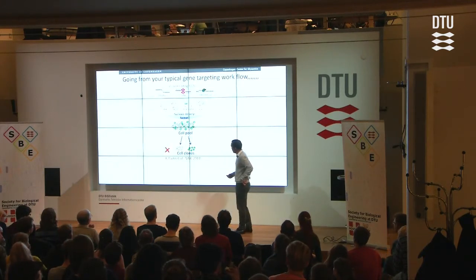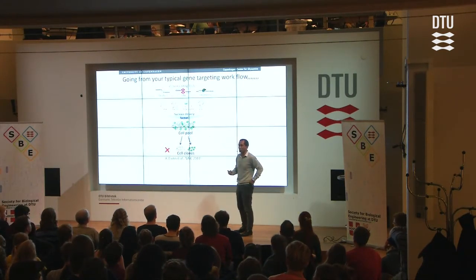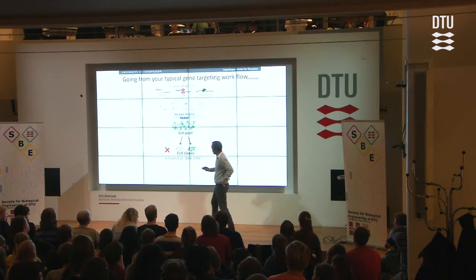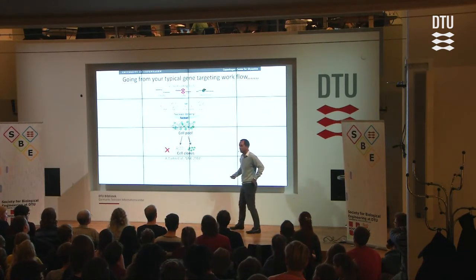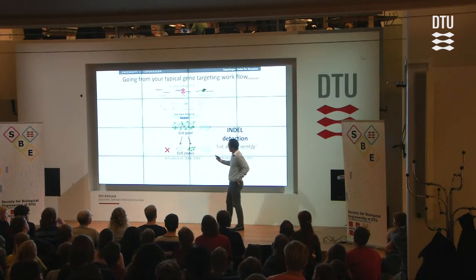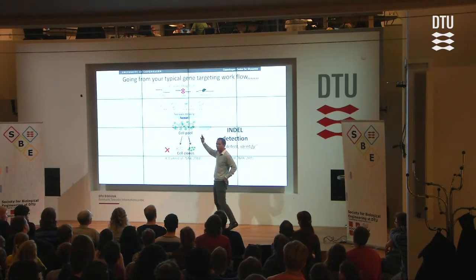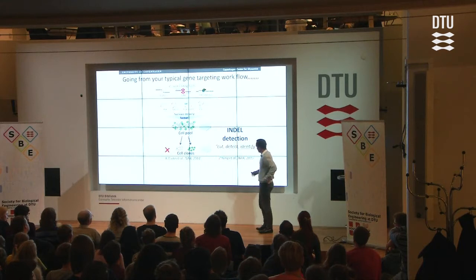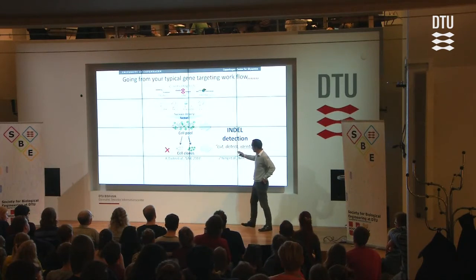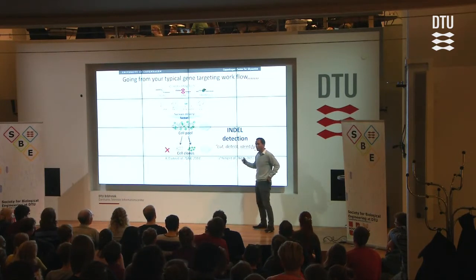We developed a method at the University of Copenhagen where we can select the cells that specifically have been exposed to CRISPR-Cas — where gene editing takes place at a higher probability — and deselect the ones where there's no editing going on. We also recently developed a method where we can exactly quantify what happens to the pool of cells when we deploy CRISPR-Cas. Detecting and identifying the targeting event is something that has been rather obscure in the field.